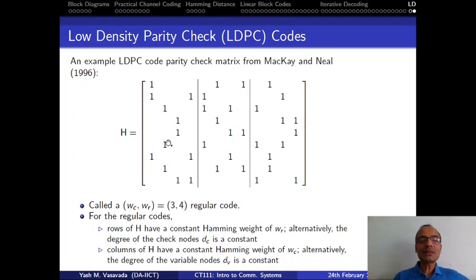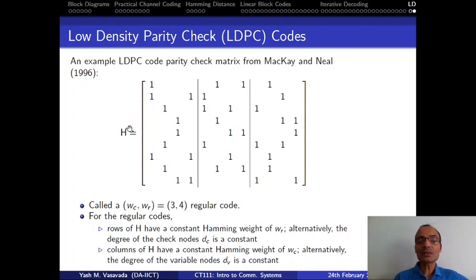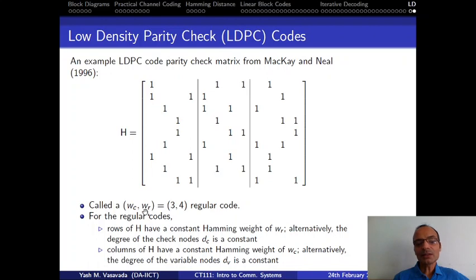This is an example of an LDPC code — it is a pretty small size code; the actual LDPC codes are far bigger with much larger H matrices. But this gives an idea of what an LDPC code H matrix looks like. Most of the matrix is filled with zeros — wherever there is a blank, assume it's a zero. Each column has three ones, so the degree of each variable node is three. Each row has four ones, so the degree of each check node — equivalently, the weight of each row — is four.